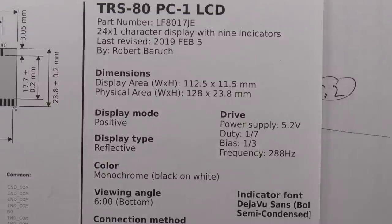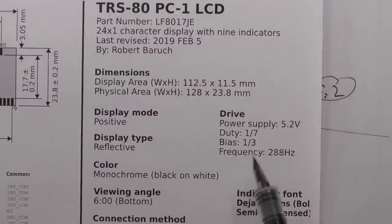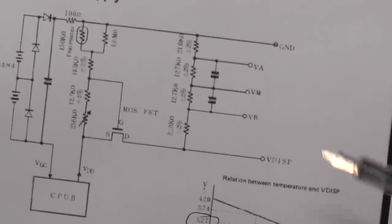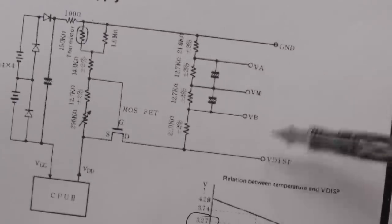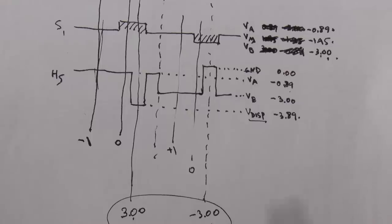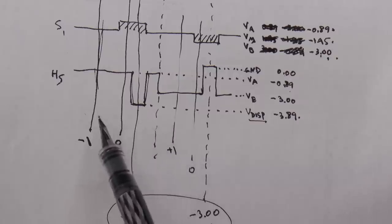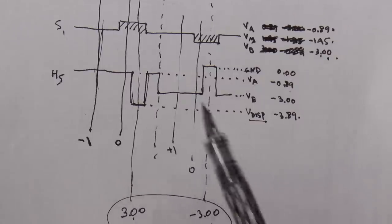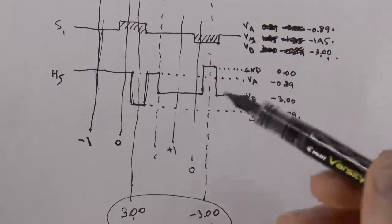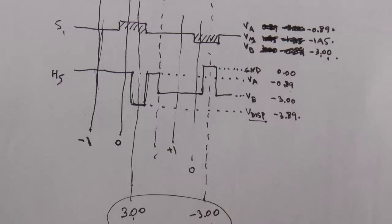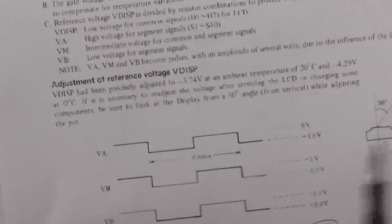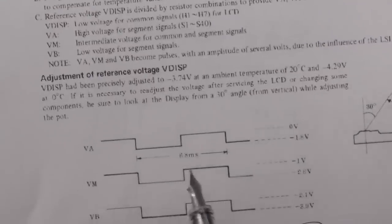So the bias of one-third referred to how many different voltages you had over here. And then the duty cycle is just during each half cycle, each segment is going to be on for one-seventh of the time. And then the final thing is the frequency, which is 288 hertz. And that came from this 6.8 milliseconds time.